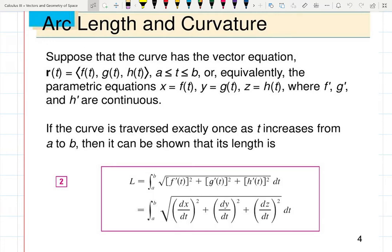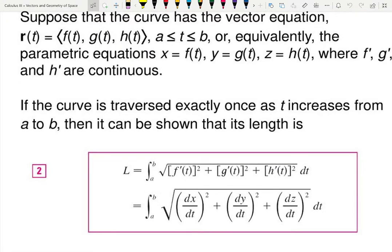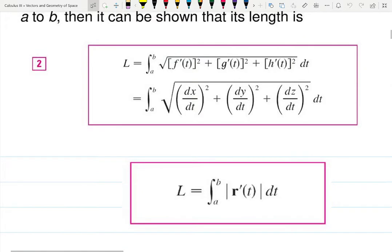Arc length: suppose the curve has the vector equation f, g, and h. The curve is traveled once as t increases from a to b, and we find it using this formula — same thing as in Calculus 2 in 2D, we're just adding one more variable. So it's the square root of derivative squared plus derivative squared plus one more derivative squared in the third dimension, all under a square root, integral from a to b. The second equation is just the magnitude of r prime — the square root of the sum of squares of derivatives.